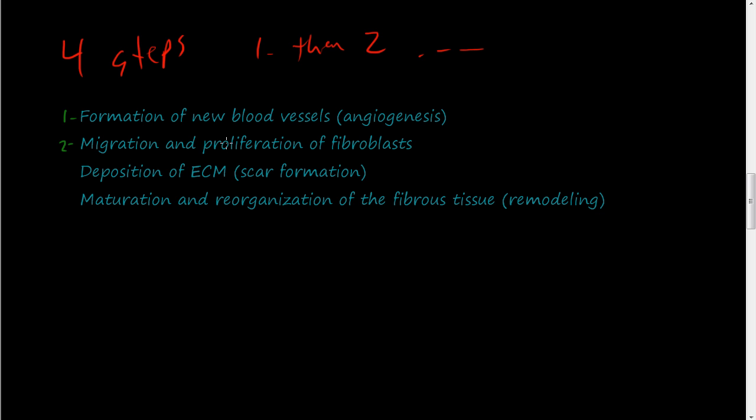Two is the migration and proliferation of fibroblasts. The fibroblasts are going to have to come in there, then they're going to start multiplying so there can be more workers to fix the wound. Three is the deposition of the extracellular matrix, or the scar formation. And then four is the maturation and reorganization of the fibrous tissue so that you gain function. We are going to talk about each one of these steps in detail, so we'll see you in the next video.